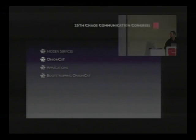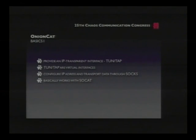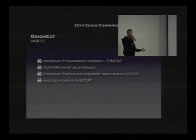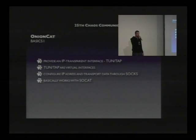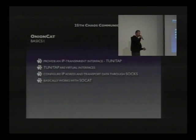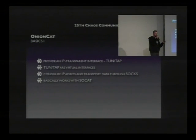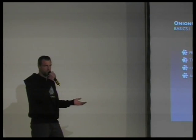Now let's dig into what OnionCat really does. We want to provide an IP-transparent interface — which SOCKS definitely is not, being a TCP interface. The TUN/TAP driver is available on more or less all operating systems, including Windows — the OpenVPN guys did a good job there. TUN/TAP devices are virtual network interfaces that stay on your host. It's like an Ethernet, but virtual. You can put an IP address on it, ping it, and do everything you can do with a normal Ethernet interface.